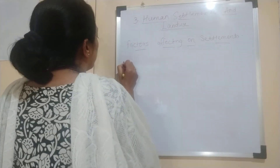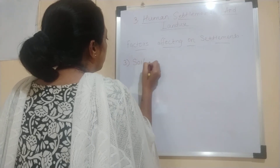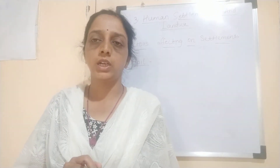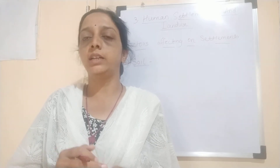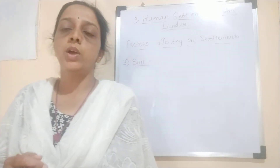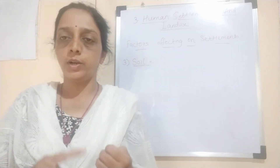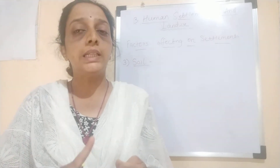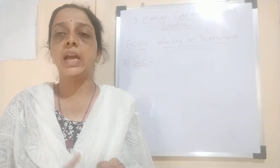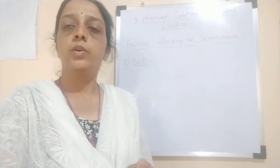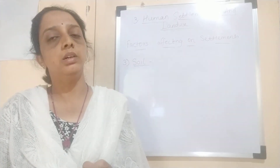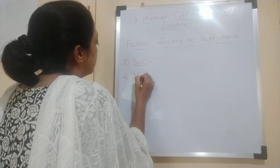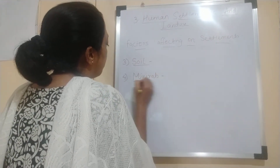The third factor is soil. Soil is very important for agriculture. If the soil is not fertile, agriculture cannot be practiced. So we see that in floodplain areas and on the banks of rivers, people settle, because in these regions the soil is fertile and agriculture can be practiced. That is why the number of settlements is more in these regions.